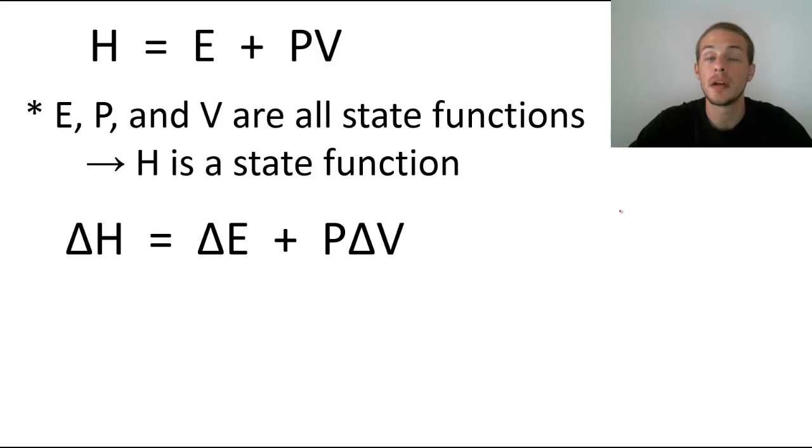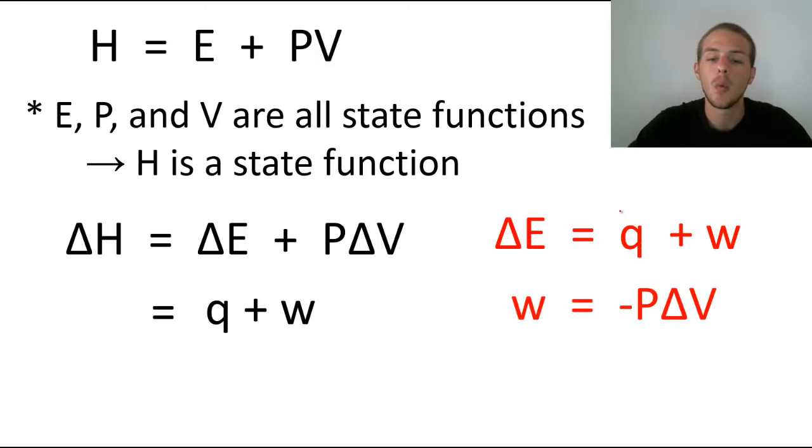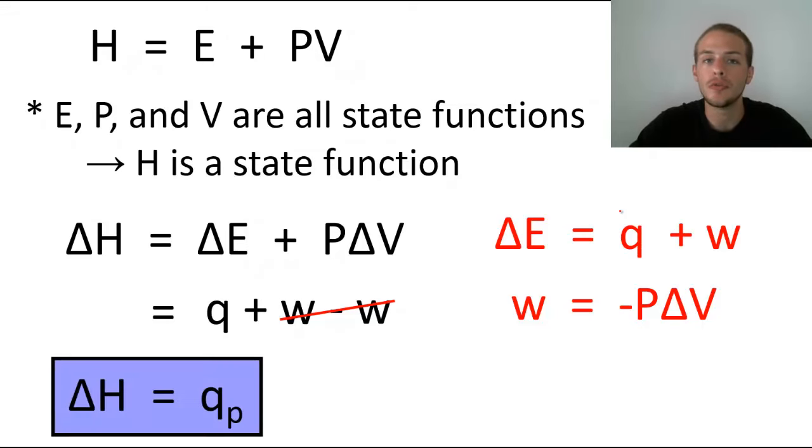We have delta H equals delta E plus P delta V. We already know expressions for delta E and P delta V. Delta E equals Q plus W. We can substitute that in. We also know that work equals minus P delta V. So P delta V is simply minus W. We get delta H equals Q plus W minus W. W minus W cancels out, giving us delta H equals Q subscript P, indicating an enthalpy change under conditions of constant pressure. So delta H is nothing more than the heat that is either absorbed by the system or released by the system into the surroundings under conditions of constant pressure.